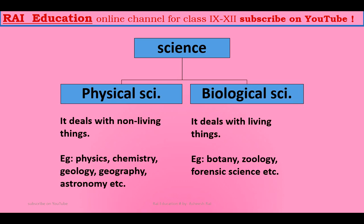Classification of science: In earlier days, science is classified into two parts — physical science and biological science. Physical science is the study of non-living things, and when the study of physical science became lengthy, it was classified into many parts for further study.